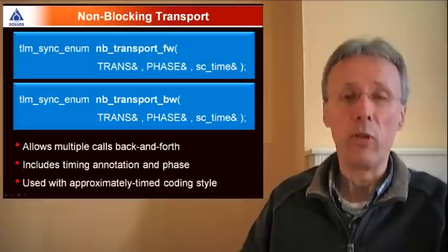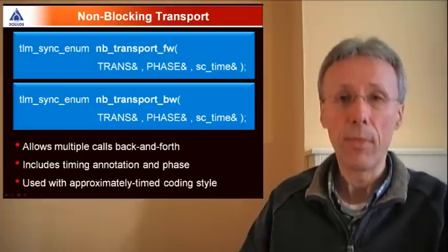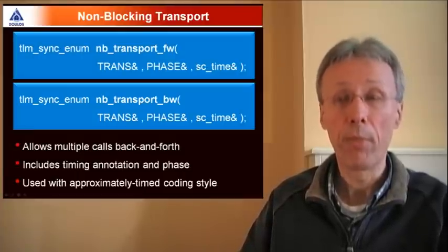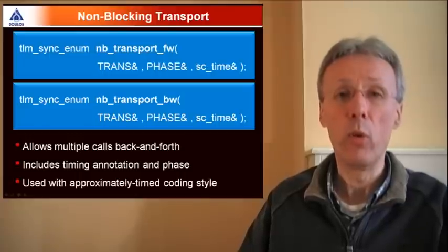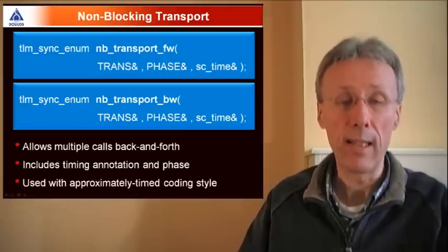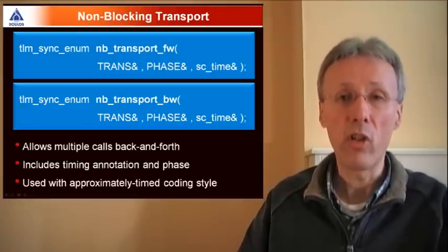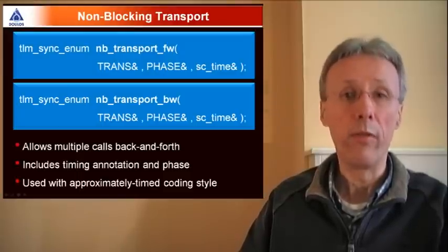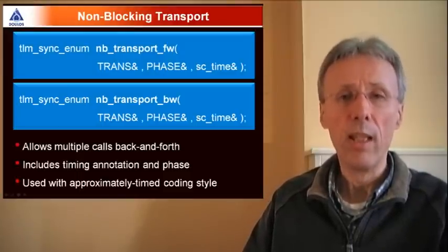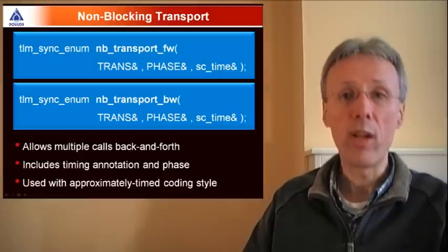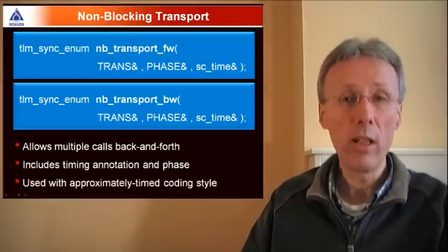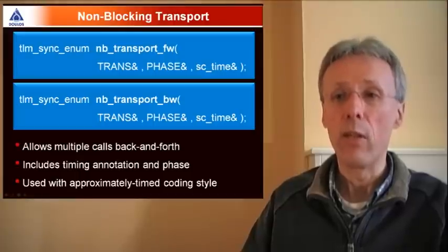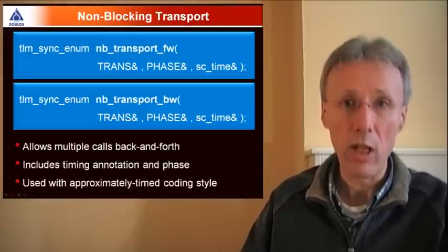The non-blocking transport interface is a little more complicated. It supports calls on both the forward path and the backward path. The idea with non-blocking transport is to support multiple phases, where a single transaction involves multiple calls to NBTransport. Some called in the forward direction, some called in the backward direction. That allows more phase transitions and more timing resolution, and at the same time sacrifices some simulation speed. So it's typically used with the approximately timed coding style.